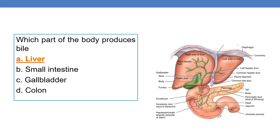Which part of the body produces bile? Bile is produced by the liver. One of the functions of the liver is the production of bile. The liver is mainly composed of two lobes — left lobe and right lobe — divided by the falciform ligament. The liver is the part of the body which produces bile.